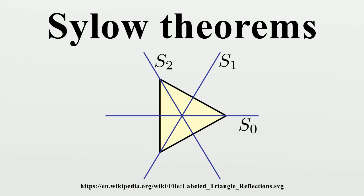Examples: A simple illustration of Sylow subgroups and the Sylow theorems are the dihedral group of the N-gon, D_2N. For N odd, 2 equals 2^1 is the highest power of 2 dividing the order, and thus subgroups of order 2 are Sylow subgroups. These are the groups generated by a reflection, of which there are N, and they are all conjugate under rotations. Geometrically the axes of symmetry pass through a vertex and a side.